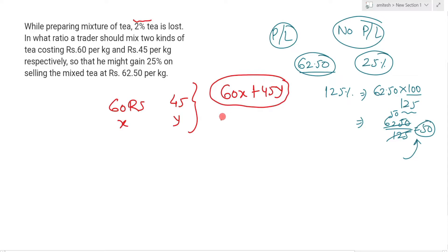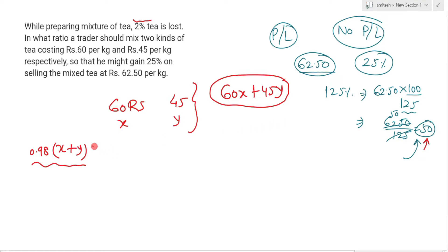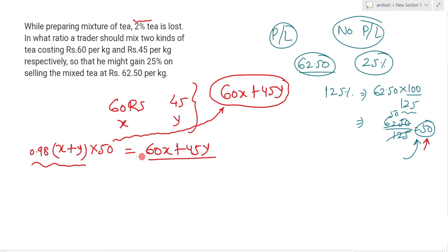मैं बहुत ज़्यादा quadratic equation solve नहीं करूँगा. Question में 2% loss है, तो original quantity (x + y) में से 0.98 का factor आ जाएगा. और इसको यदि 50 rupees से बेच रहे हो तो कोई profit और loss नहीं हो रहा है. It means अगर आप इसमें 50 से multiply करोगे तो original जो लागत था वही आ जाएगा, और वो equal था 60x + 45y के.